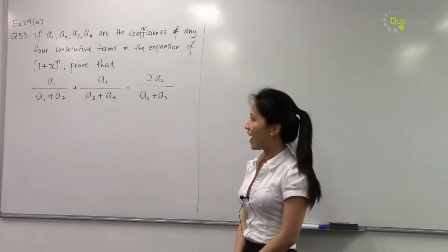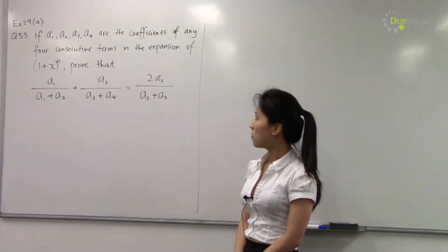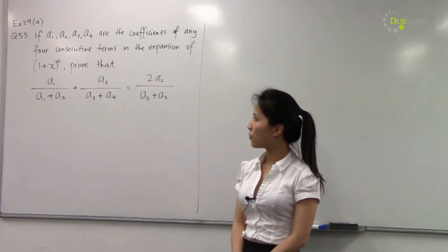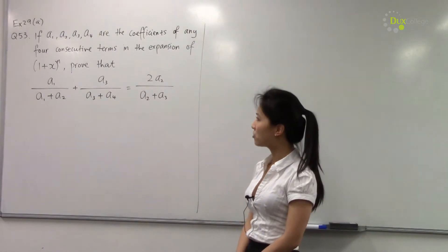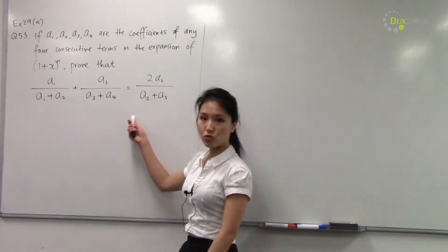This is exercise 29a, question 53. If a₁, a₂, a₃, a₄ are the coefficients of any four consecutive terms in the expansion of (1 + x²)ⁿ, prove that this is true.